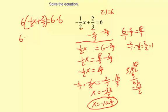So it'll be 6 times negative 1 half x plus 6 times 2 thirds equals 6 times 6, which is 36.